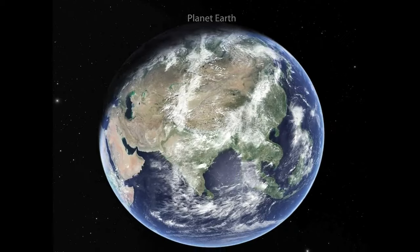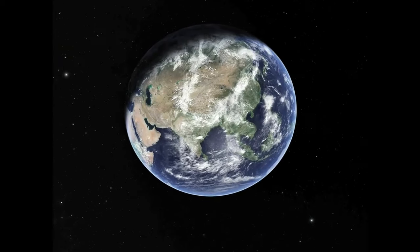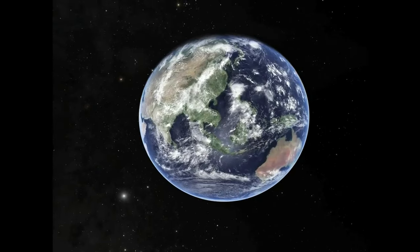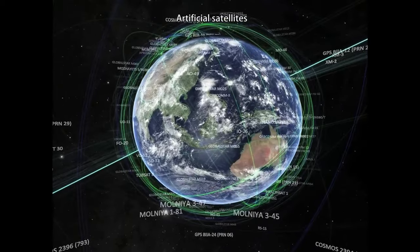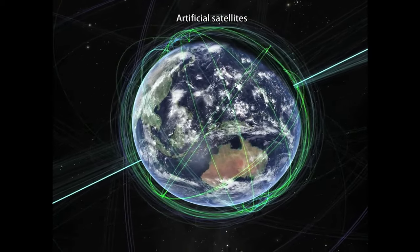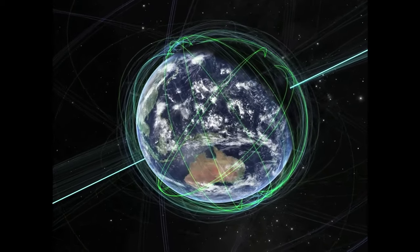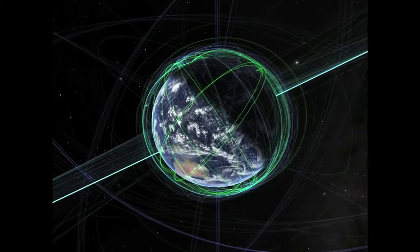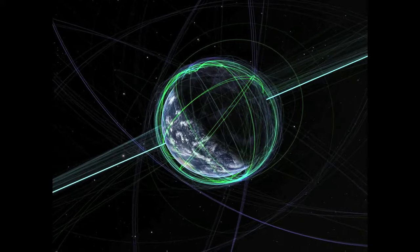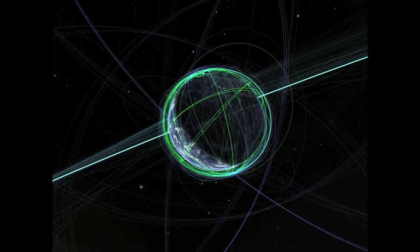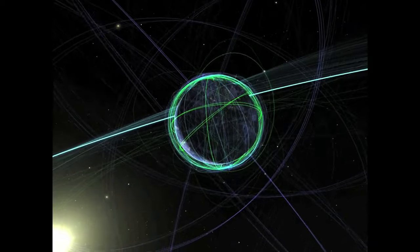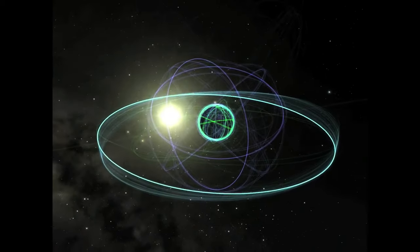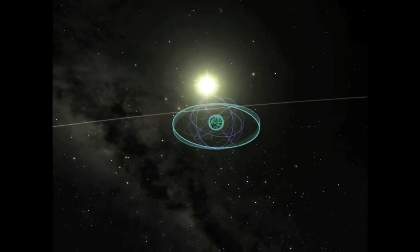The digital universe Atlas has been built at the American Museum of Natural History over the past 12 years. We maintain that, put that together as a project to really chart the universe across all scales. What we see here are satellites around the Earth and the Earth in proper registration against the universe. NASA supported this work 12 years ago as part of the rebuilding of the Hayden Planetarium so that we would share this with the world.